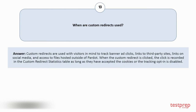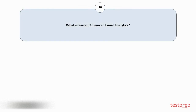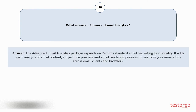Question number thirteen: When are custom redirects used? Custom redirects are used with visitors in mind to track banner ad clicks, links to third-party sites, links on social media, and access to files hosted outside of Pardot. When the custom redirect is clicked, the click is recorded in the custom redirect statistics table, as long as they have accepted the cookies or the tracking opt-in is disabled.